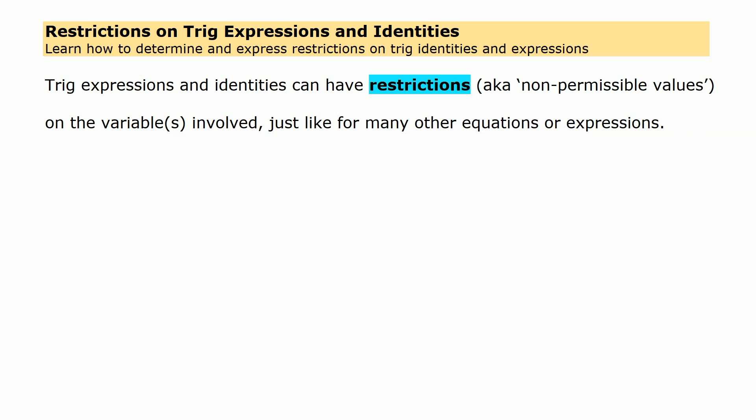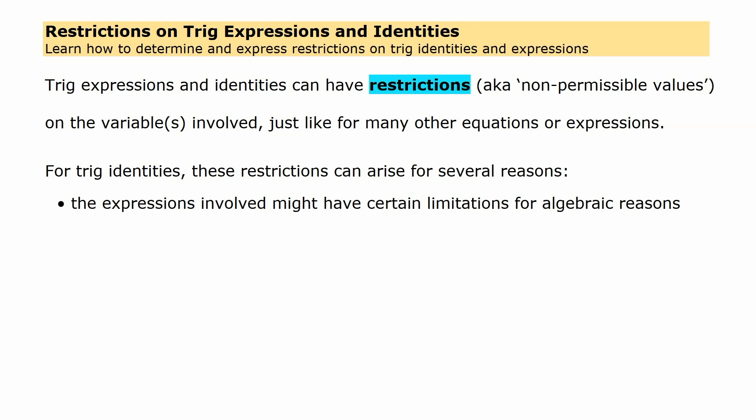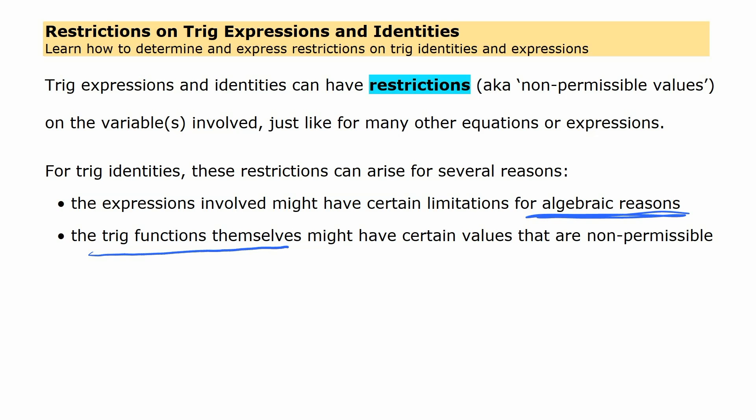Just like other expressions and equations that you've seen and worked with in the past. But for trig identities, these might happen for several reasons. First of all, the expressions involved might have certain limitations for algebraic reasons — often having to do with the denominator, or a square root involved, or something like that. But the other reason is that the trig functions themselves might have certain values that are not permissible, as you've likely already seen in this unit.